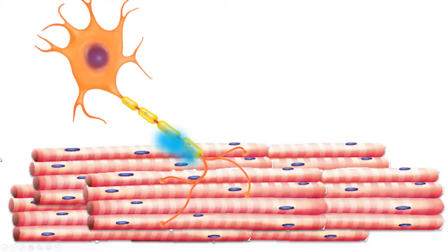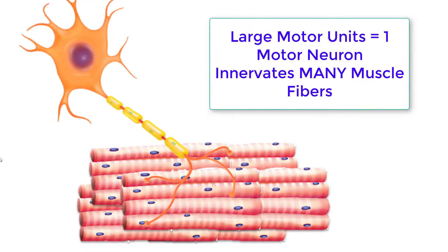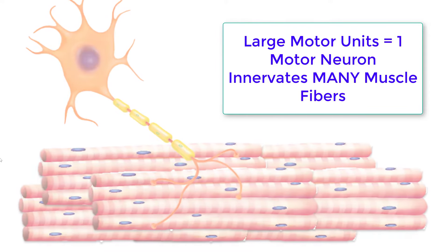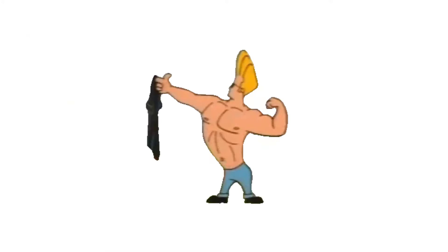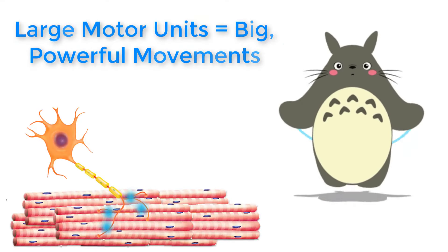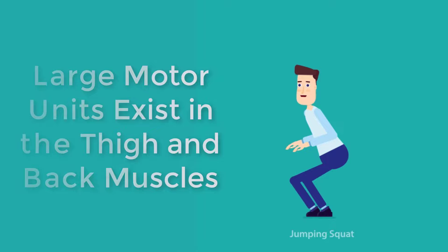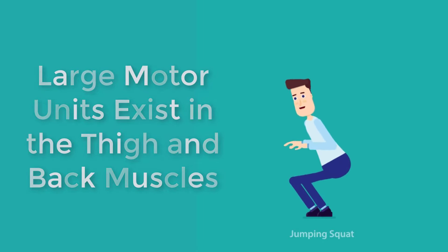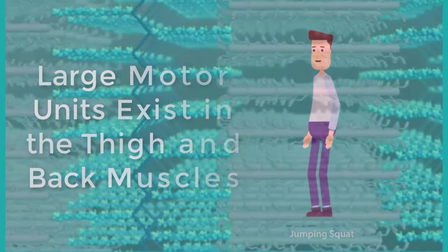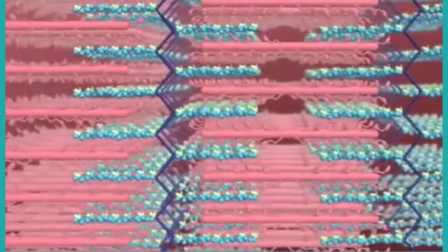A large motor unit is an arrangement where a single motor neuron supplies a large number of muscle fibers in a muscle. Large motor units are concerned with simple movements, such as powerfully extending the knee joint. The best example is the large motor units of the thigh muscles or back muscles, where a single motor neuron will supply thousands of muscle fibers in a muscle.